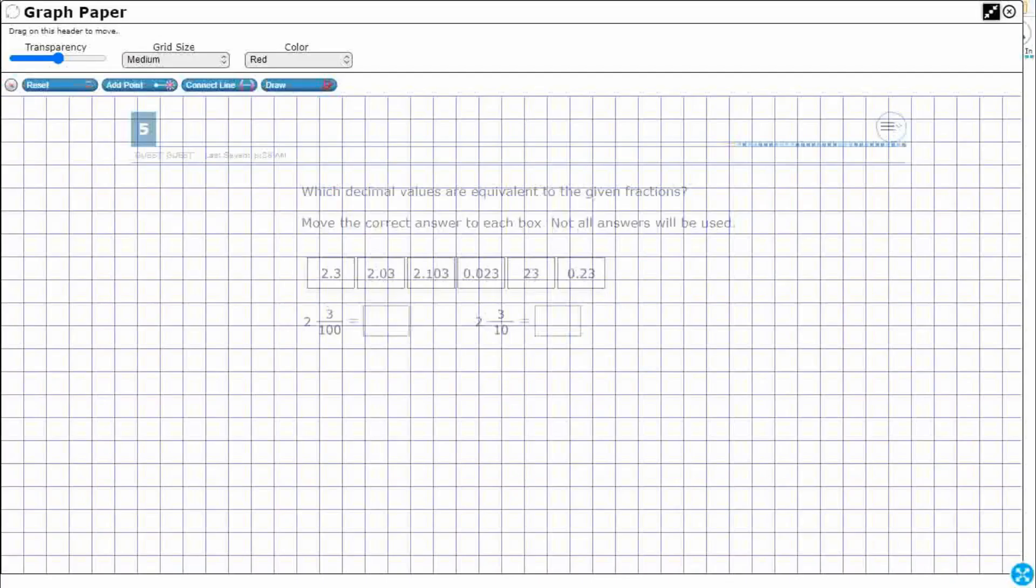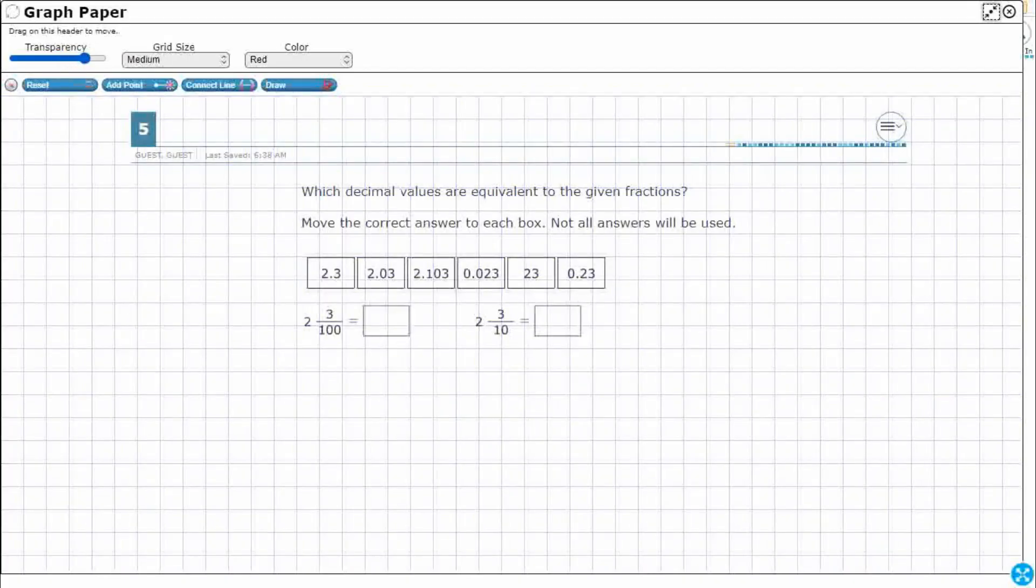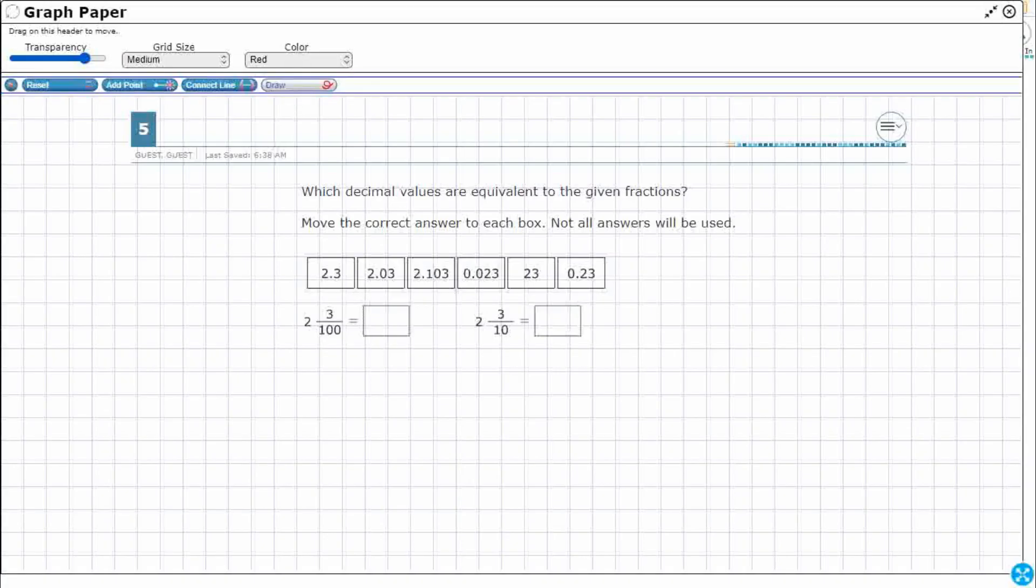I'm going to open up my graph draw feature. I'm going to expand it with the two arrows diagonal in the top right. Make it a little bit more transparent because we've got some mixed numbers here. So you notice that I've got a whole number two and a whole number two.